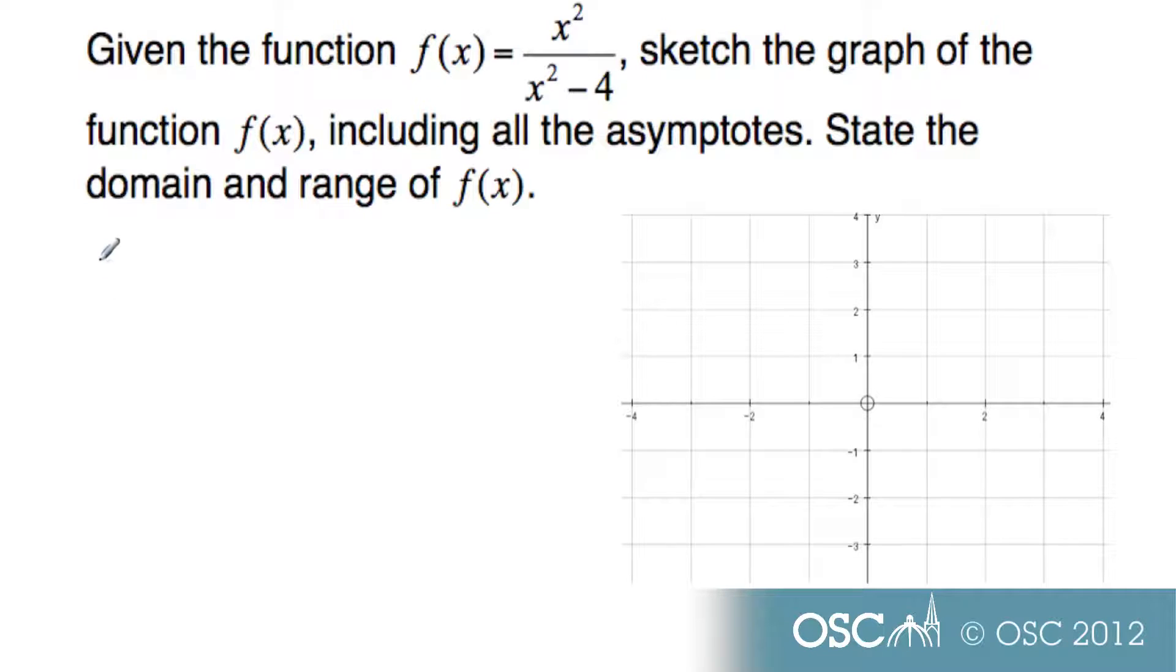Let's consider first our vertical asymptotes. To find our vertical asymptotes, they exist where x is not allowed to be. If I look at this fraction, I know 0 is not allowed to be in the bottom of the fraction. So if I set the bottom equal to 0, I get x squared is 4, and x then is plus or minus 2.